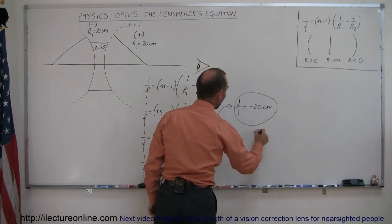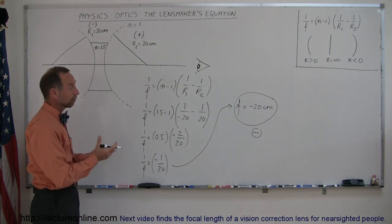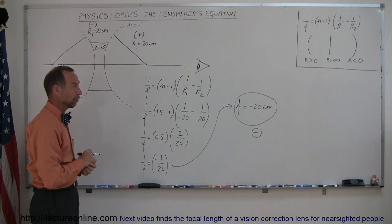Okay, notice that this is now a negative quantity. Negative focal length means it's a diverging lens, and it has a focal length of minus 20 centimeters. And that's how you do diverging lenses.